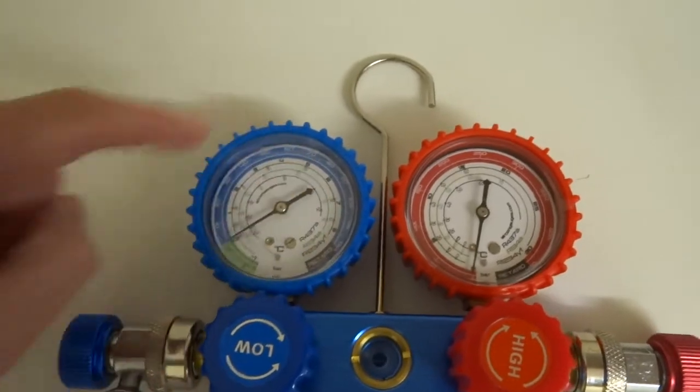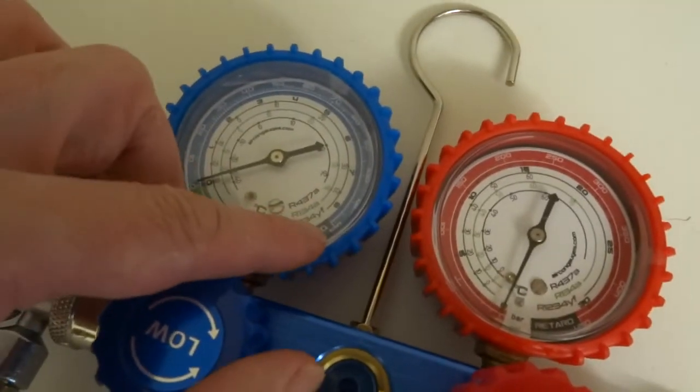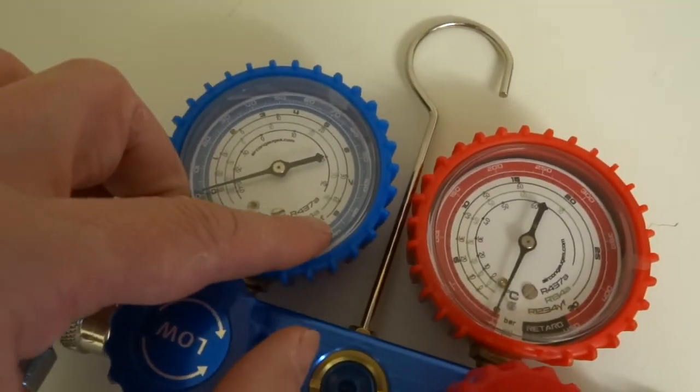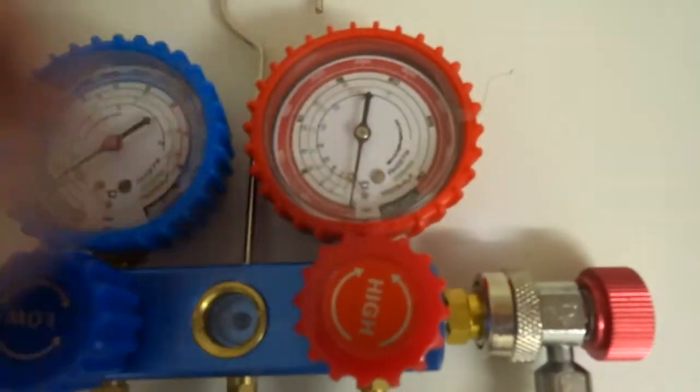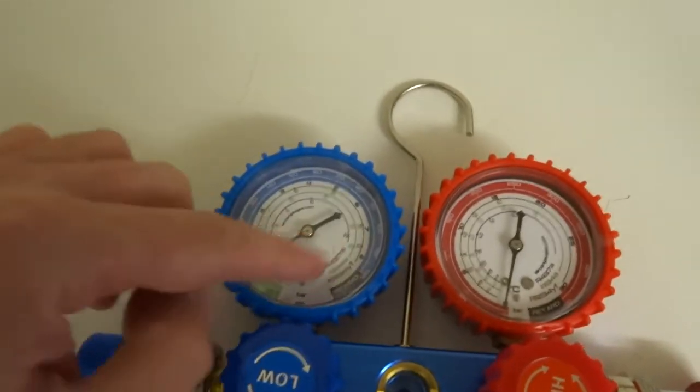The numbers on the inside, if you have a look, it's got R1234, 134A, 437. Same on this side. So basically that's the gases.